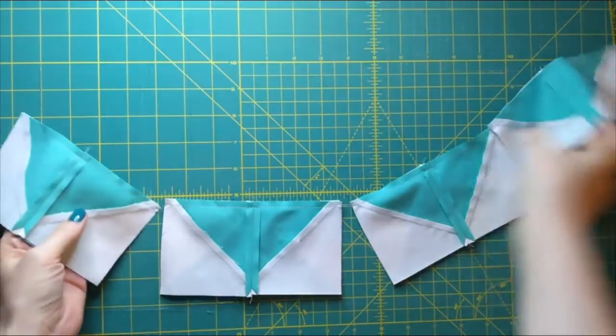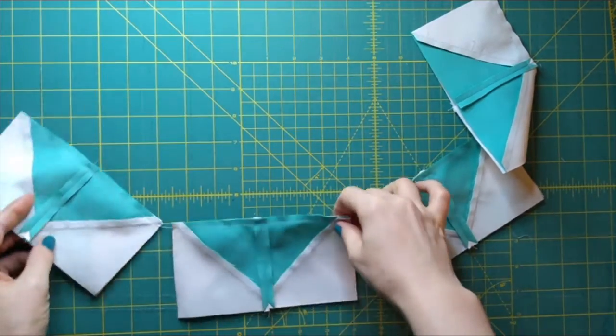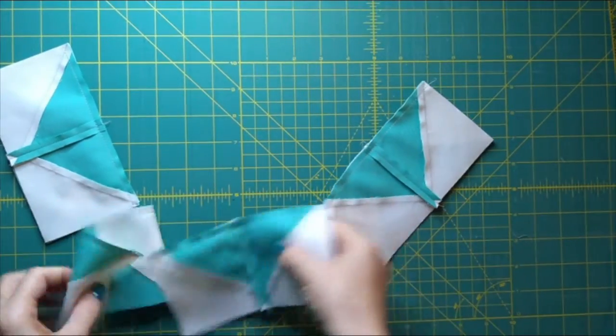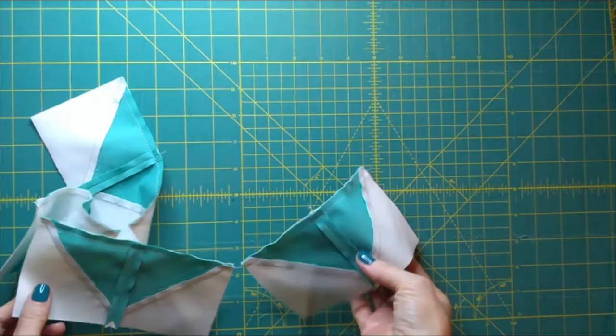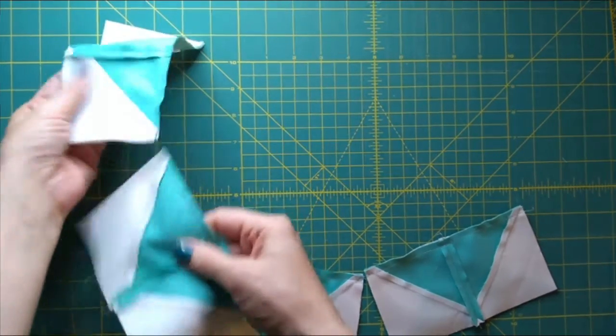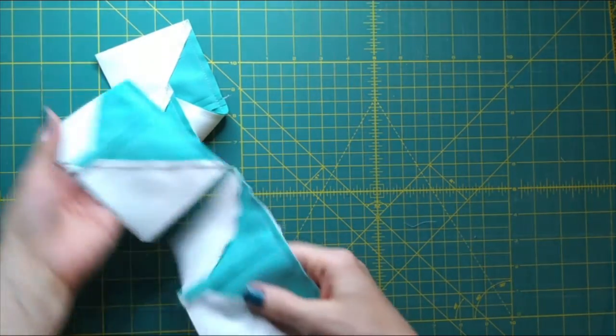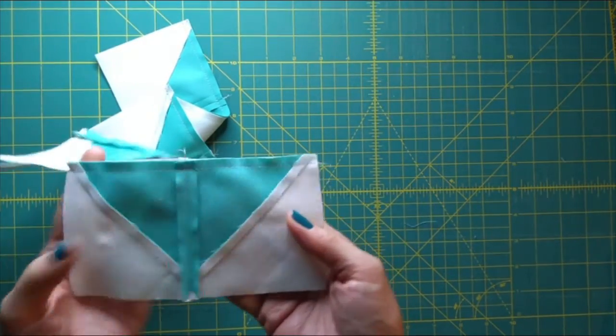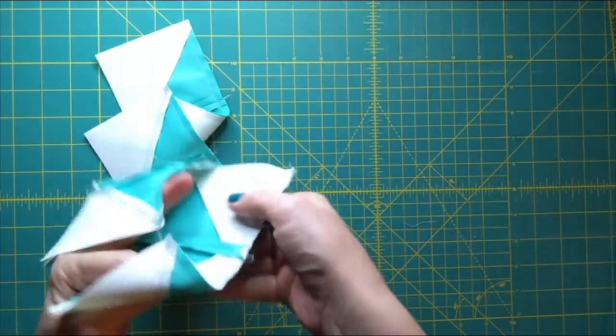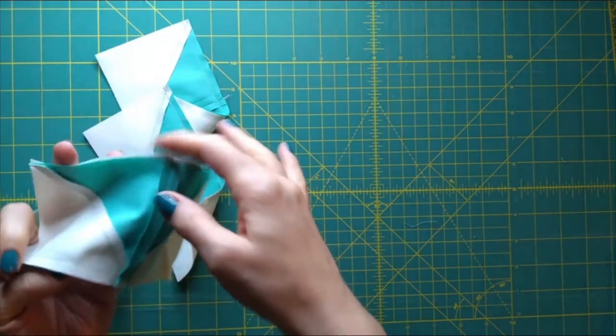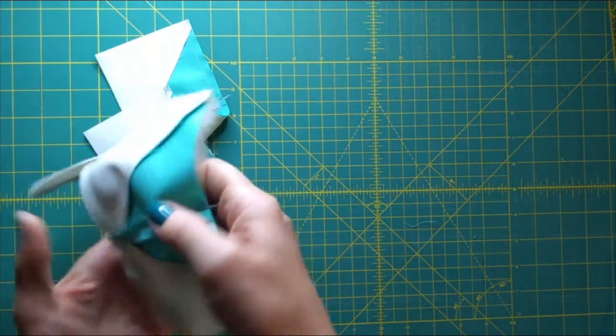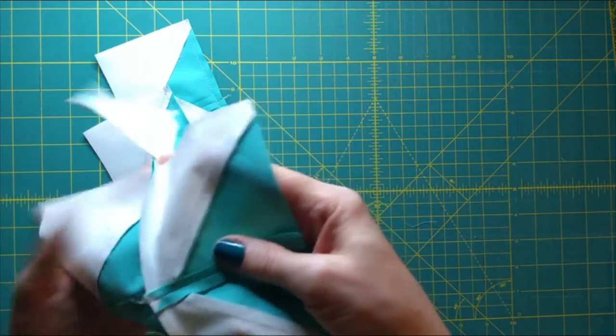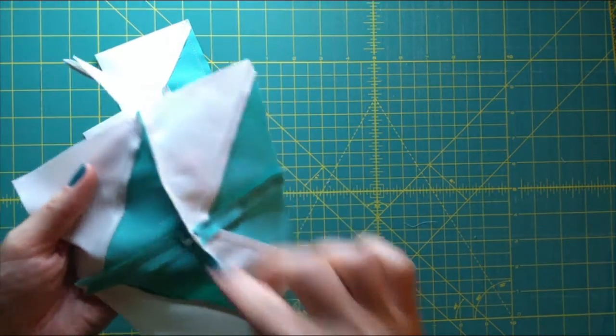These are also units that you can chain piece. I try to chain piece as often as I possibly can. These were all the same so I just stacked them up, put them next to my machine and fed them through one at a time and didn't snip. So now I'll snip them apart and press them open. Oh and it was really handy that I pressed these seams open because as I matched the two up, I didn't have to worry about which direction they were going for nesting. They're both flat and open. I'm going to do the same thing with this seam. Iron it open.